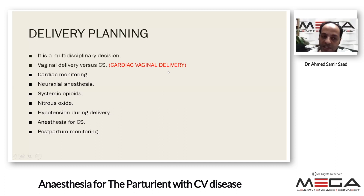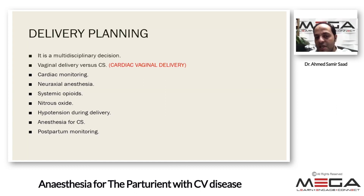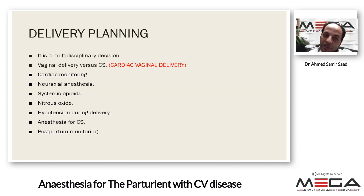Cardiac vaginal delivery is a vaginal delivery where, during the second stage of labor, the patient is asked not to strain. The uterus is allowed to contract and the baby descends, then forceps or ventouse is used. Patients with cardiac disease, whether delivering vaginally or by cesarean section, should be well monitored.